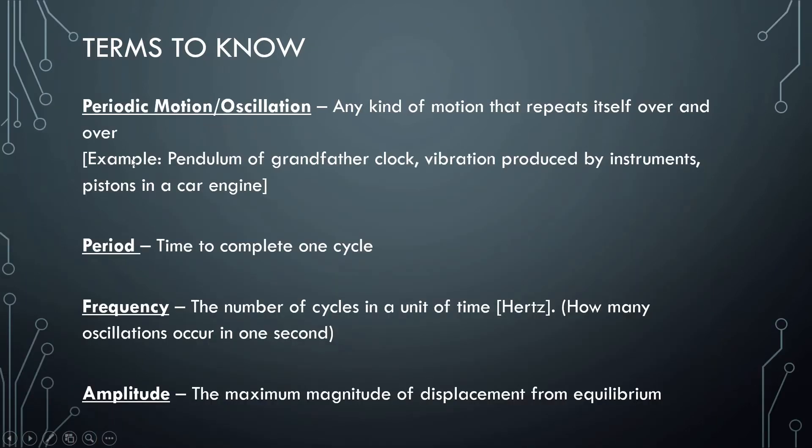So, some terms to know. Periodic Motion or Oscillations, any kind of motion that repeats itself over and over. Examples: pendulums, pendulum of the grandfather clock, vibration produced by instruments, pistons in the car engine, all periodic motions, all oscillations.